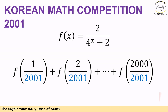Hello everyone. In this video we are going to talk about a problem from the Korean math competition from 2001. In this problem we have f of x is equal to 2 over 4 to the power of x plus 2, and we want to find f of 1 over 2001 plus f of 2 over 2001 up to f of 2000 over 2001.